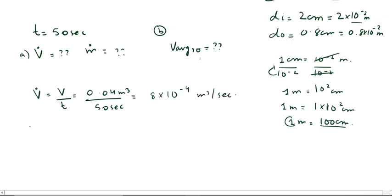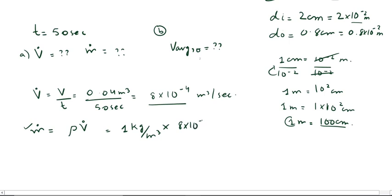Now we find m-dot, which equals rho times V-dot. The density of water rho is 1000 kilograms per meter cube, multiplied by 8 × 10⁻⁴ meter cube per second. The meter cube units cancel, giving us m-dot = 8 × 10⁻¹ kilograms per second.